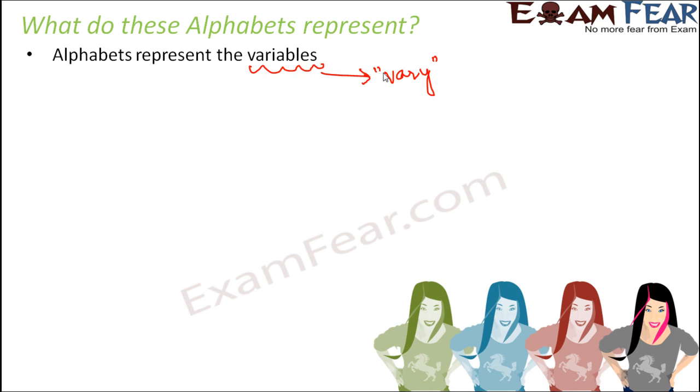So what are these alphabets which keep varying with different situations? Do you see the picture on the screen? It shows the same person but with different appearance, sometimes the hair is blue, sometimes green, sometimes red, sometimes black. The appearance changes depending on the situation.